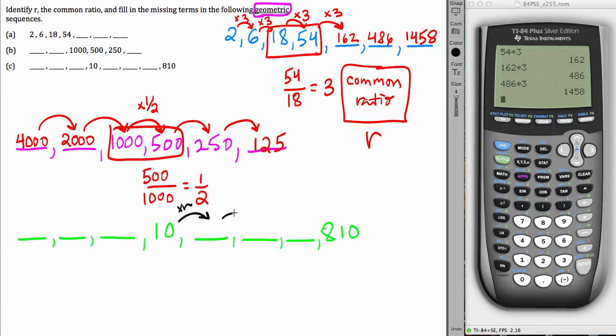To get to the very next term, you'd have to multiply by r again. To get to the next missing term, you'd have to multiply by r again. And finally, to get to 810, you'd multiply by r again. So what we've just realized then is that starting at 10 and multiplying by r 4 times in a row means 10 times r to the 4th equals 810.